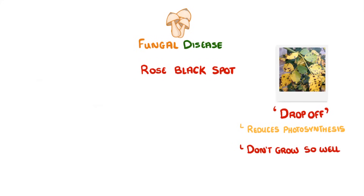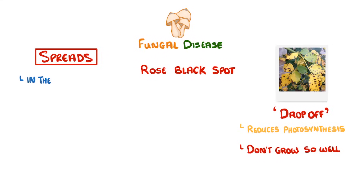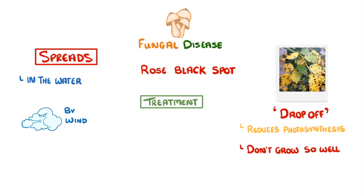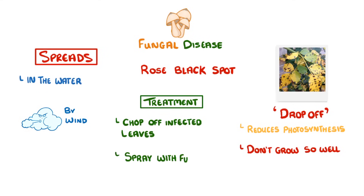The rose black spot fungus normally spreads by being transported either in the water or by the wind. To treat it, we can either chop off all of the infected leaves or spray the plant with fungicides, which kill any fungus. If you choose to chop off the leaves, be sure to destroy them so that the fungi can't spread to any other plants.